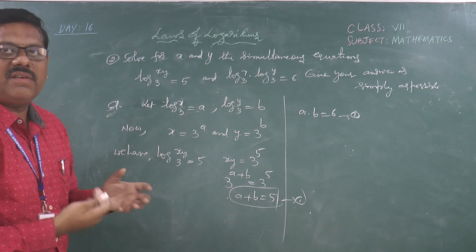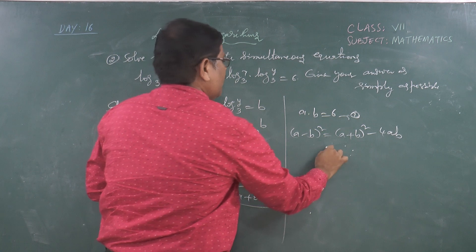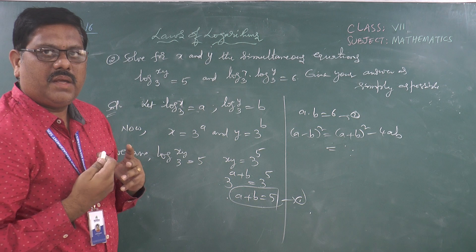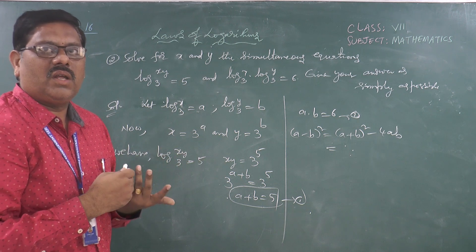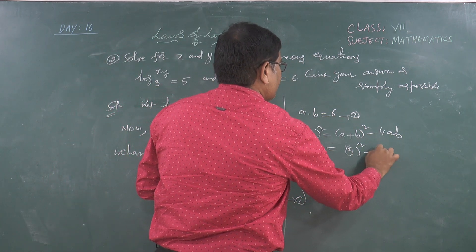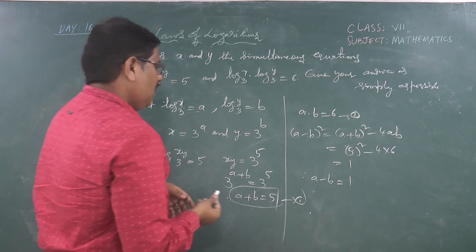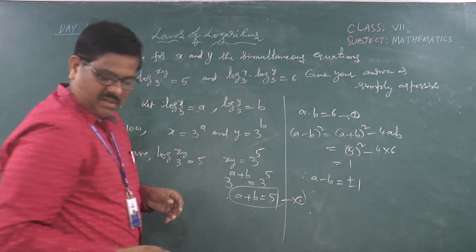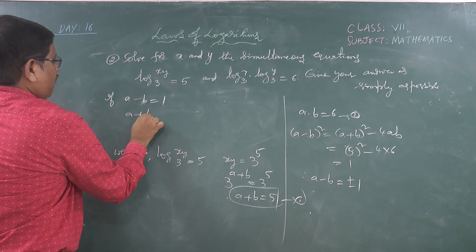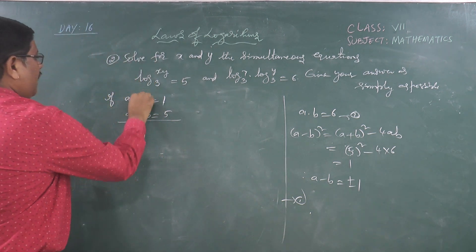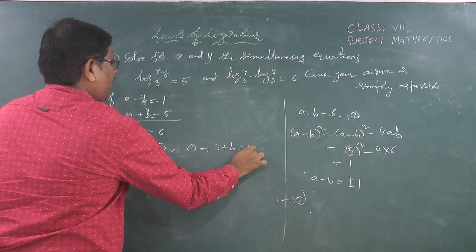We solve these two conditions to find a and b. Using the identity (a minus b)² equals (a plus b)² minus 4ab: (a minus b)² equals 5² minus 4 times 6, that is 25 minus 24, which equals 1. Therefore a minus b equals plus or minus 1. First case: a minus b equals 1 and a plus b equals 5. Solving: 2a equals 6, so a equals 3. Then 3 plus b equals 5, so b equals 2.